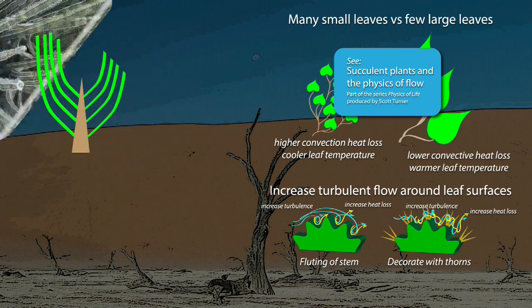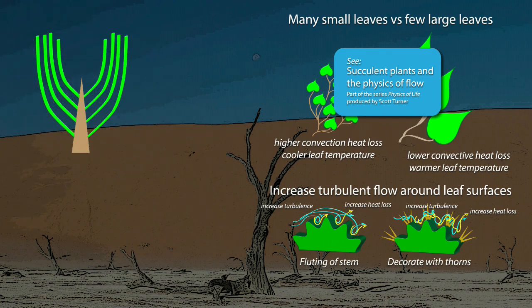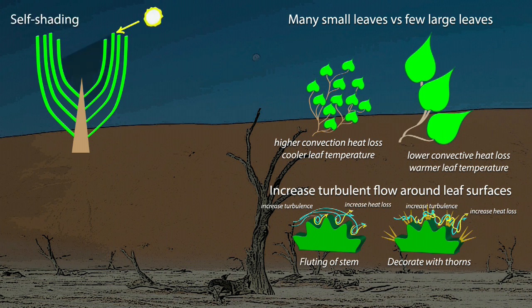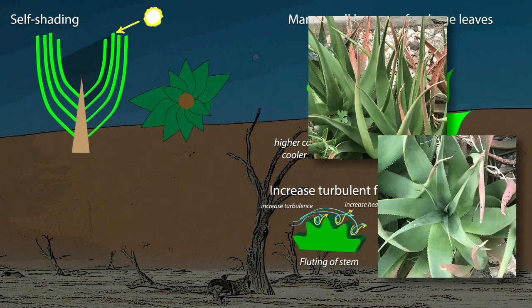Desert plants can also arrange their leaves so that some proportion of them are shaded at any time of the day by other leaves. This is a common strategy followed by aloes, which arrange their leaves in circular arrays that maximize this kind of self-shading.